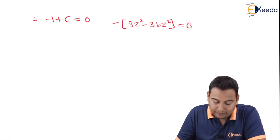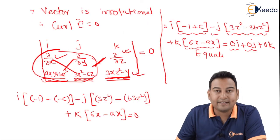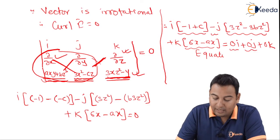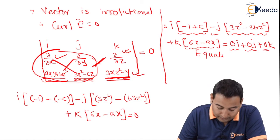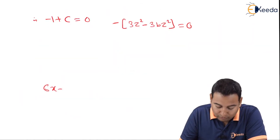And the last is, with k we have 6x minus ax, and with k we have 0. Therefore, 6x minus ax will be equated to 0.